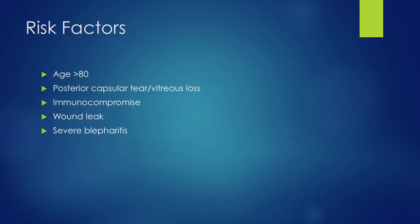The main risk factors for endophthalmitis are elderly age, more than 80, immunocompromise such as HIV or other immune deficiency disorders, severe blepharitis or poor lid hygiene — if there's a lot of matter and crud on the eyelashes and eyelid margins. If there's a poor construction of the wound, if the wound at the end of cataract surgery is leaky or doesn't seal well, that's a huge risk factor for infection inside the eye.